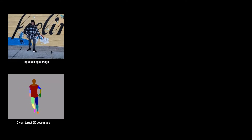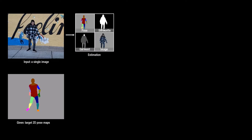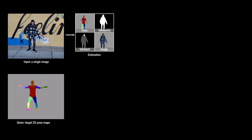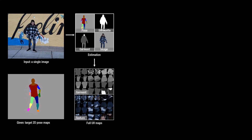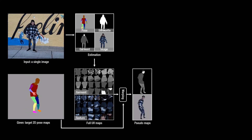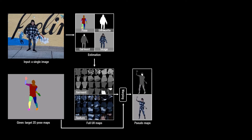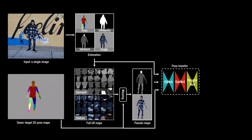To this end, we first estimate the silhouette, garment labels, and body pose from the source image. Using them, we reconstruct complete UV maps of the garment and texture. We utilize these UV maps to create the pseudo-maps, which provide incomplete yet strong guidance to generate the person image in a temporally coherent way.